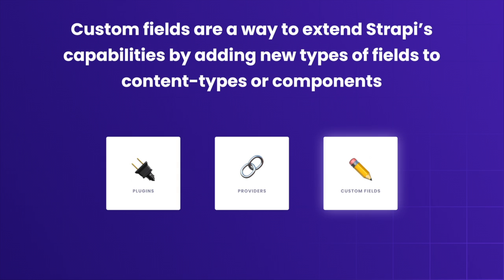Some plugins can add custom fields to Strapi. Custom fields are a way to expand Strapi's capabilities by adding new types of fields to the content types or components. Once added to Strapi, custom fields can be created in the content type builder and used in the content manager.